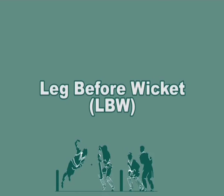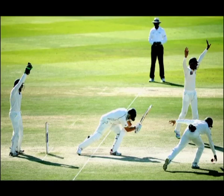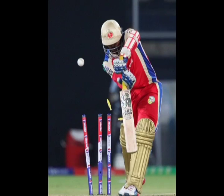Leg Before Wicket (LBW): If the ball is bowled and it hits the batsman first without the bat hitting it, then the player can be given an LBW. However, the umpire must consider certain factors before giving an LBW. The first thing the umpire needs to decide is: would the ball have hit the wickets if the batsman was not there? If the answer is yes and the ball was not pitched on the leg side of the wicket, he can give the batsman out. However, if the ball hits the batsman outside the line of off stump while attempting to play a stroke, then he is not out.